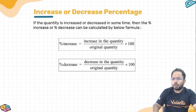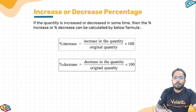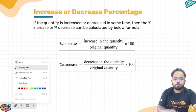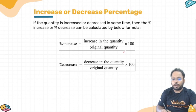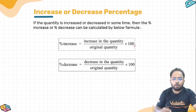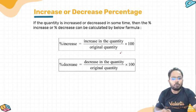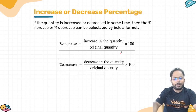We are going to do questions on increase or decrease percentage. We can have some formula here. If a quantity is increased or decreased over some time, then the percentage increase or percentage decrease is calculated as: percentage increase = increase in quantity divided by original quantity, multiplied by 100. Similarly, percentage decrease = decrease in quantity divided by original quantity, multiplied by 100. Multiplying by 100 converts it into a percentage. It will be more clear when we do some questions.